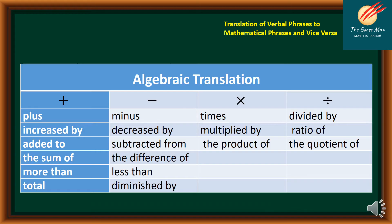Before we move on, it is quite helpful if we know mathematical symbols in English words and vice versa. So here are the following: if we have the plus symbol, it means increase by, added to, the sum of, more than, and total.